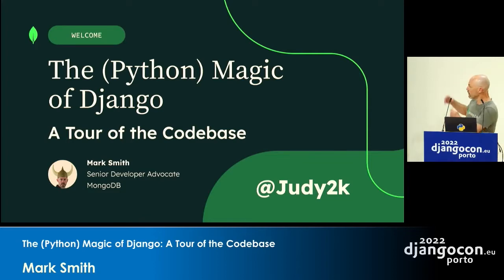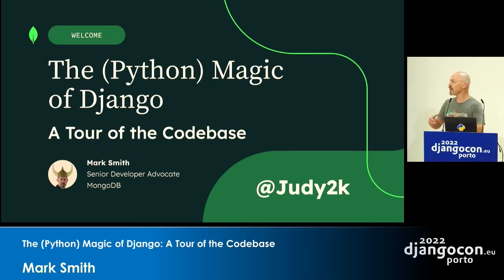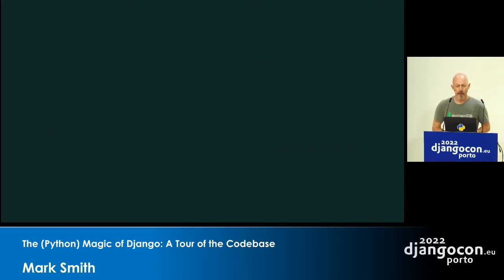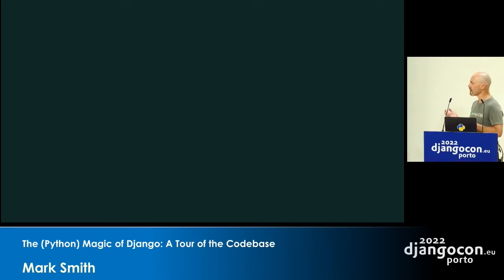This talk is called The Python Magic of Django. It's really an exploration of how Django uses some of the advanced dynamic programming and metaprogramming features of Python to let Django do what it does. I've been obsessed by all of these features — like descriptors and metaclasses — for quite some time.